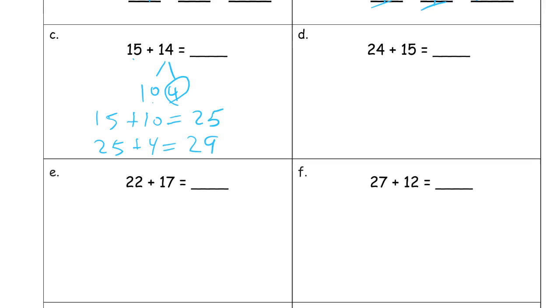This is gonna be similar because we have a 4 and a 5 for ones here again. Split up the smaller number, 15, that's 10 and 5. Add the 24 and the 10. 34. Then add the 34 to the 5, the other part. 39.